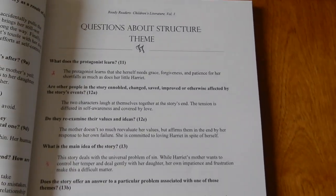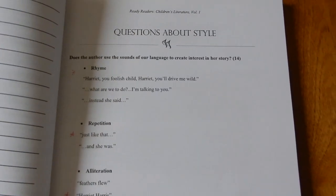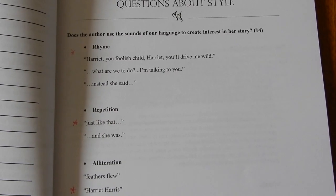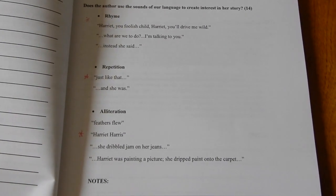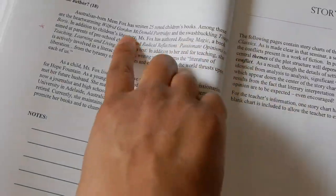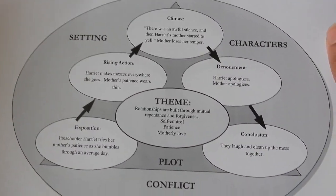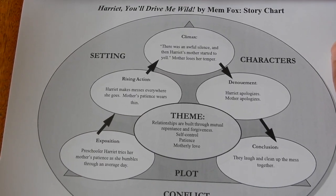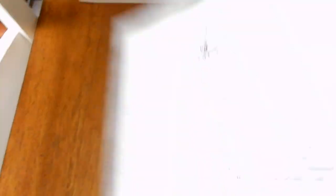We went ahead and talked about the theme and I went through all of them. Here's an example of the style questions: 'Does the author use the sounds of our language to create interest — rhymes, repetition, alliteration?' There's also a little something about the author and a chart already filled out with all the answers. Since I'd never done anything like this before, that was a really good visual for me.